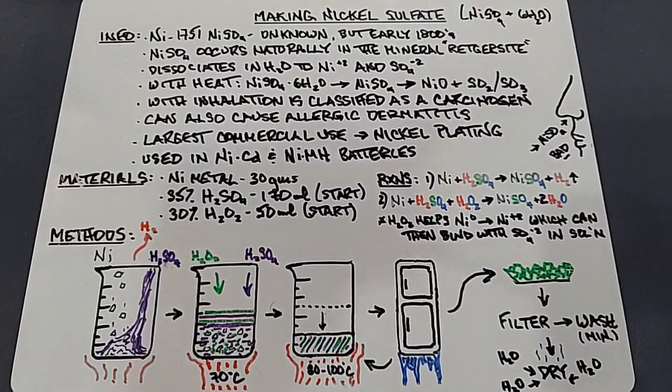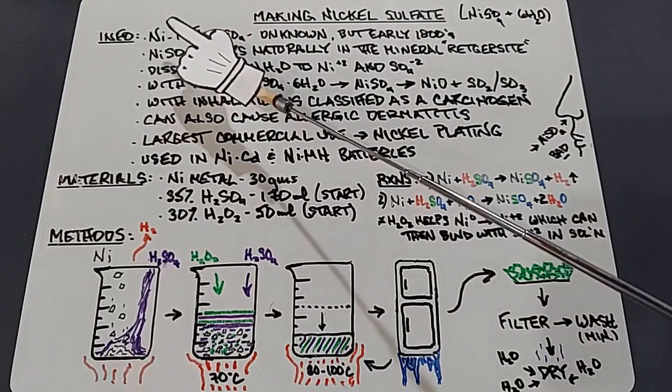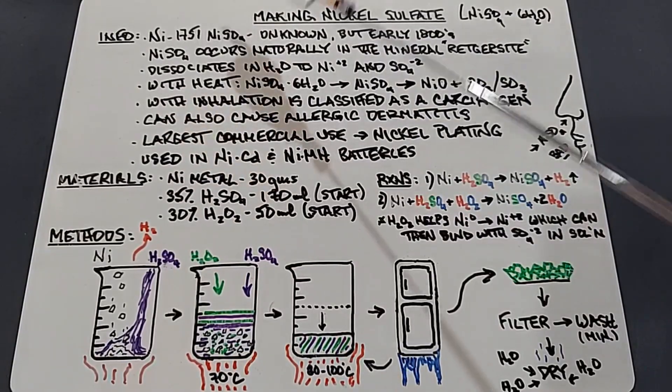In lieu of going over nickel plating in the future, I needed nickel chloride, which we made last time, and this time it's nickel sulfate, also nickel sulfate hexahydrate. A quick review: nickel was discovered in 1751.